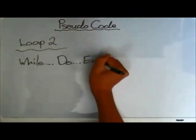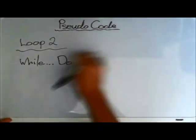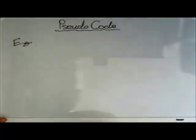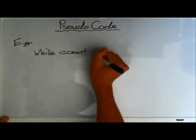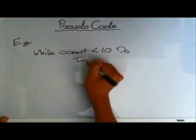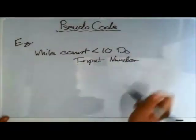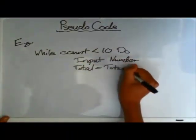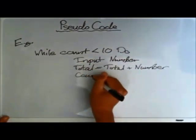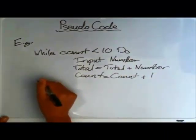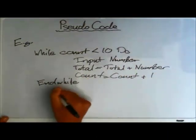Now let's look at loop number two: WHILE, DO, and WHILE. So while count is less than ten, do: the user inputs a number, the number is taken and added to total, and then count equals count plus one — that's how you control how many times you go through the loop.